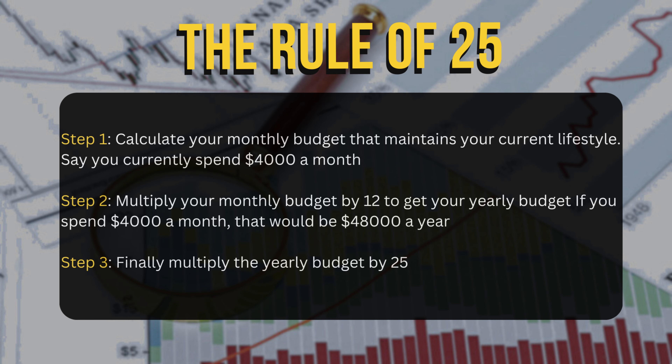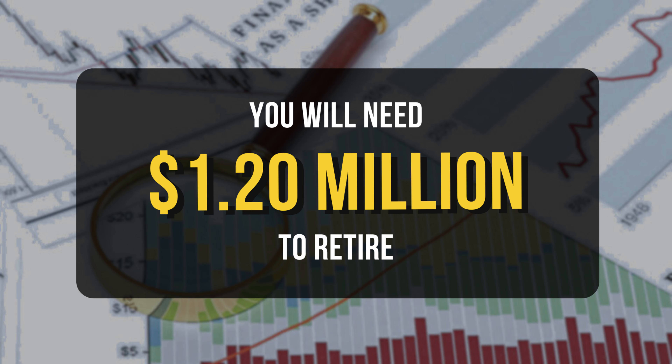Your retirement plan depends on what sort of lifestyle you would like to lead during retirement. A luxurious lifestyle would require saving up a larger amount, while a modest lifestyle requires saving up less. To do a simple calculation using the rule of 25: first, calculate your monthly budget that maintains your current lifestyle — say you spend $4,000 a month. Second, multiply your monthly budget by 12 to get your yearly budget, which gives $48,000 a year. Finally, multiply the yearly budget by 25, giving you $1.2 million to maintain your current lifestyle when you retire.